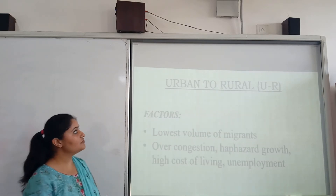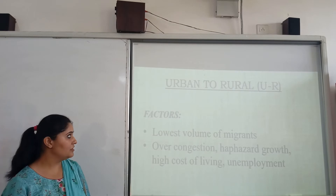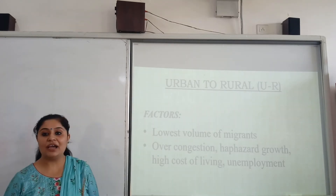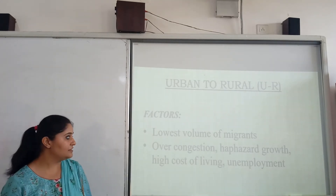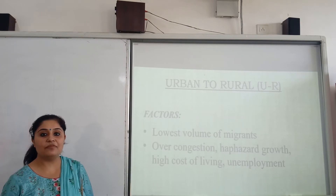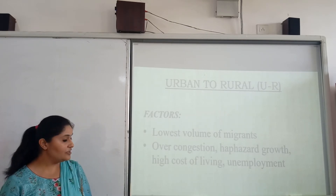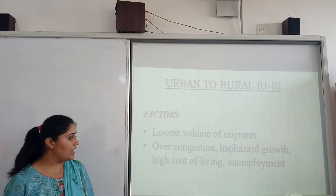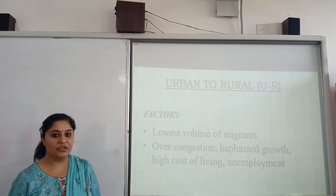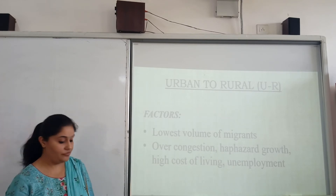The last stream of migration is urban to rural migration. This stream has the lowest volume of migrants. The reasons for this type of migration are over-congestion, hazardous growth, high cost of living, and unemployment. This type of migration takes place at the advanced stage of urbanization.